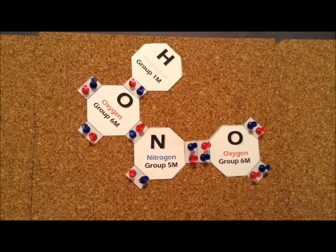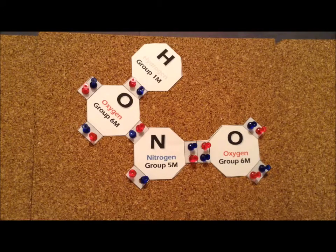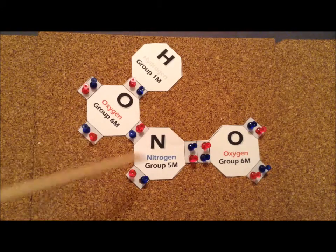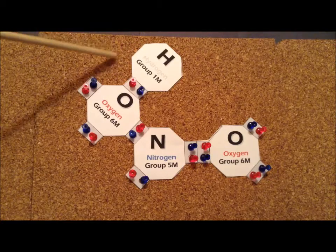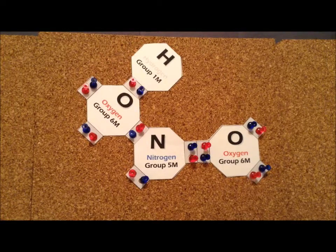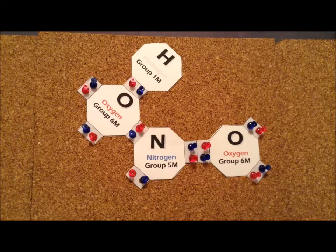To form the Lewis structure, we notice that each nitrogen contributes 5 electrons, each oxygen contributes 6, that gives us 17 electrons, and then we need 1 electron for the hydrogen atom. Notice that the hydrogen atom is connected directly to the oxygen and not to the nitrogen.